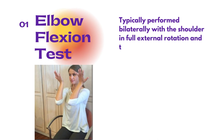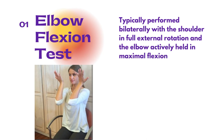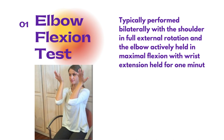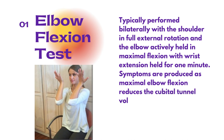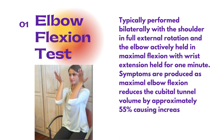The elbow flexion test is performed bilaterally on both sides with the shoulder in full external rotation and elbow in flexion with the wrist extension, held for one minute. Symptoms are produced as the elbow is maximally flexed, which reduces the cubital tunnel volume by approximately 55 percent. This reduction in cubital tunnel volume increases neural pressure on the ulnar nerve, leading to the reproduction of pain.